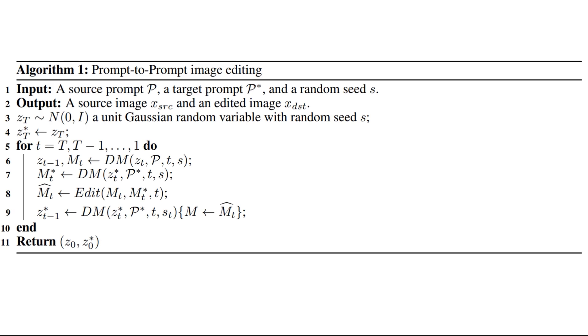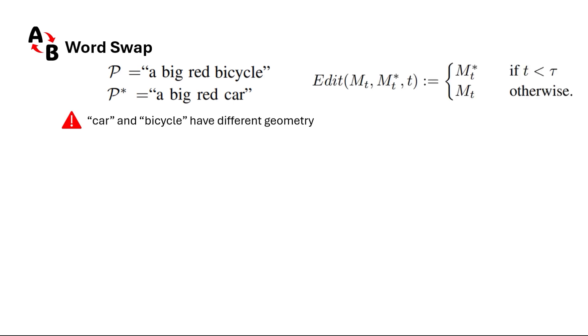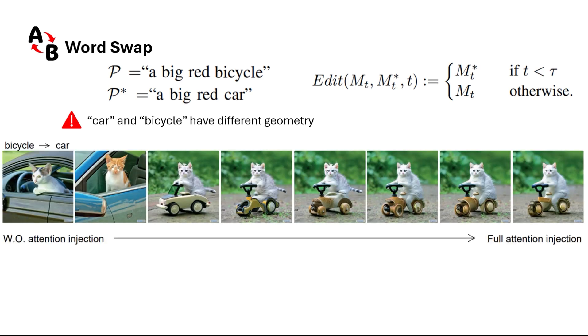The first editing is word swap, where we have an original prompt like 'a big red bicycle' and we want to edit it into 'a big red car.' One big challenge is that the car and bicycle have different geometry. To mitigate this issue, the authors propose this editing function where we only replace attention maps in the first few steps of denoising. Then when the overall structure is formed, we let the model fill the details freely.